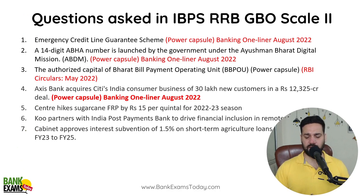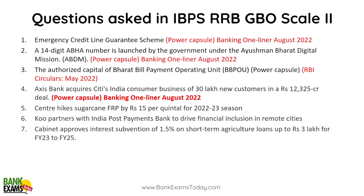Let me show you what was asked in previous years. The first question was directly from a government scheme — power capsule. Every year we make a power capsule and a lot of questions are asked from it. This year we have already released a superset with 567 questions and 200 more will be added — a total of 700–800 questions, and we expect 15–20 of those to appear in the exam. BBPS was from an RBI circular; Axis Bank acquiring Citibank's consumer business was also important.